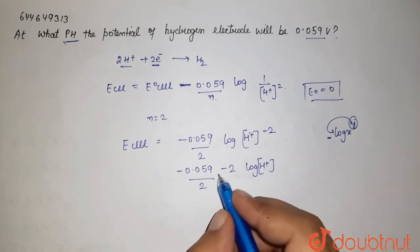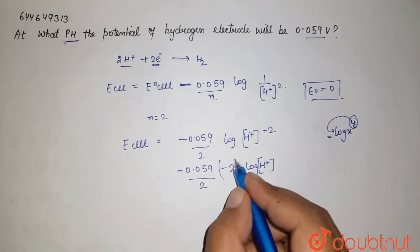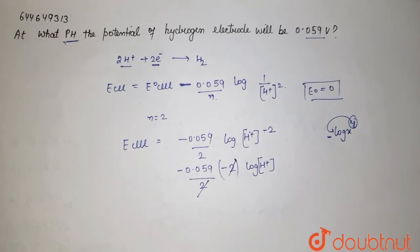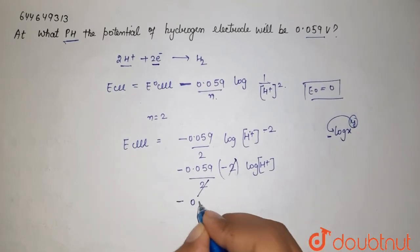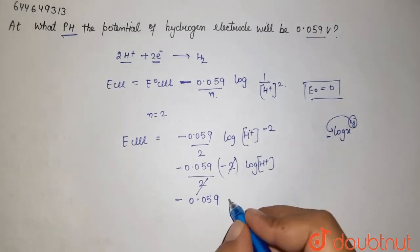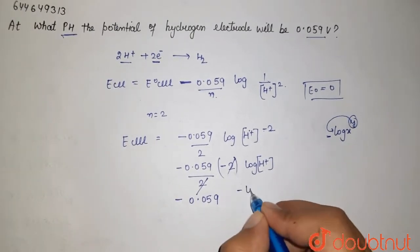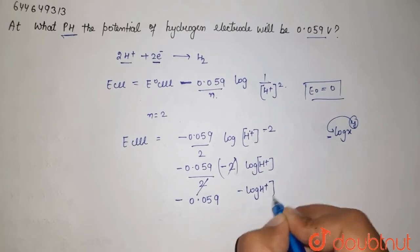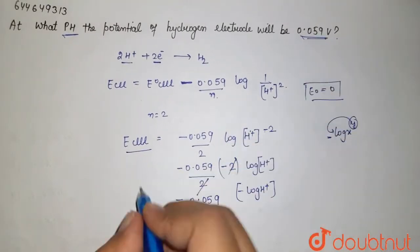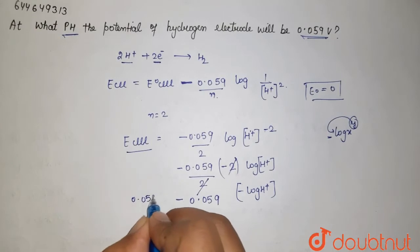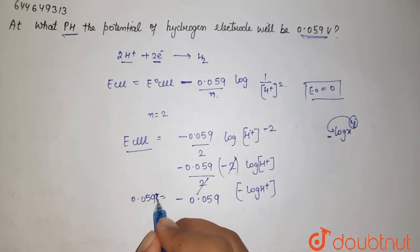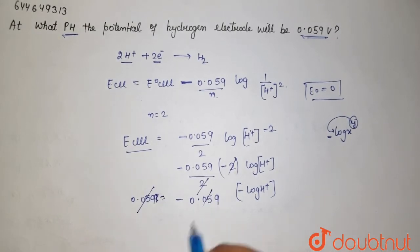leaving us with minus 0.059 times minus log [H⁺]. Since E_cell in the question is 0.059V, we can substitute this value and it cancels with the 0.059 coefficient,